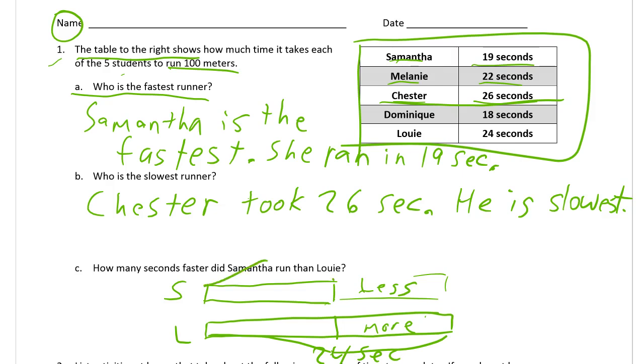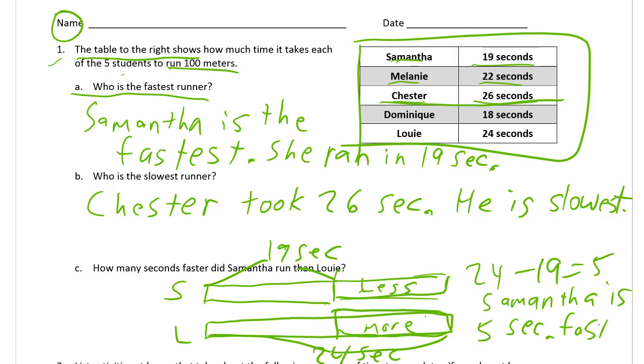We know Louie was 24 seconds, and Samantha's time was 19 seconds. So we have to find out the difference between 24 and 19. That's going to be the difference—the more or the less, they're going to be the same. 24 minus 19, those numbers are close enough you could count them up from 19, and you're going to get five. So Samantha is five seconds faster.